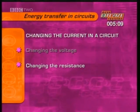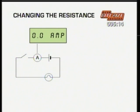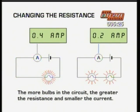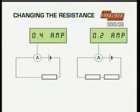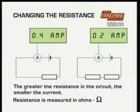The other way of changing the current in a circuit is to change the resistance. One way to do this is to change the number of components, such as bulbs, in the circuit. Bulbs are designed to offer resistance to the flow of electricity — that's why they glow. More bulbs in the circuit means a greater resistance and smaller current. Adding different resistors in the circuit can also change the resistance. The greater the resistance, the smaller the current. Resistance is measured in ohms, written using the Greek letter omega.